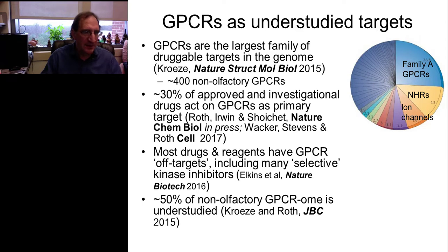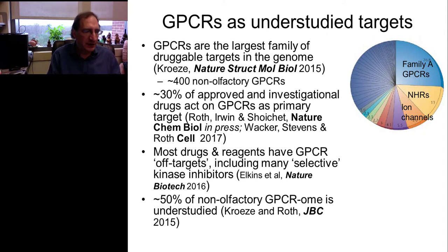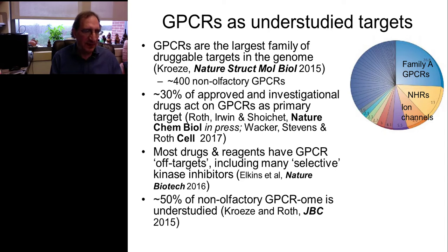One of the nice things about GPCRs — I'm going to use the acronym GPCRs going forward — is that they're the largest family of druggable targets in the human genome. There are around 400 non-olfactory GPCRs in the human genome. Perhaps a third of approved and investigational drugs act on GPCRs as their primary target. Interestingly, in addition to the 30% of approved medications, most drugs and reagents used in cell biology and chemical biology also have important off-target actions at GPCRs, including many selective kinase inhibitors.